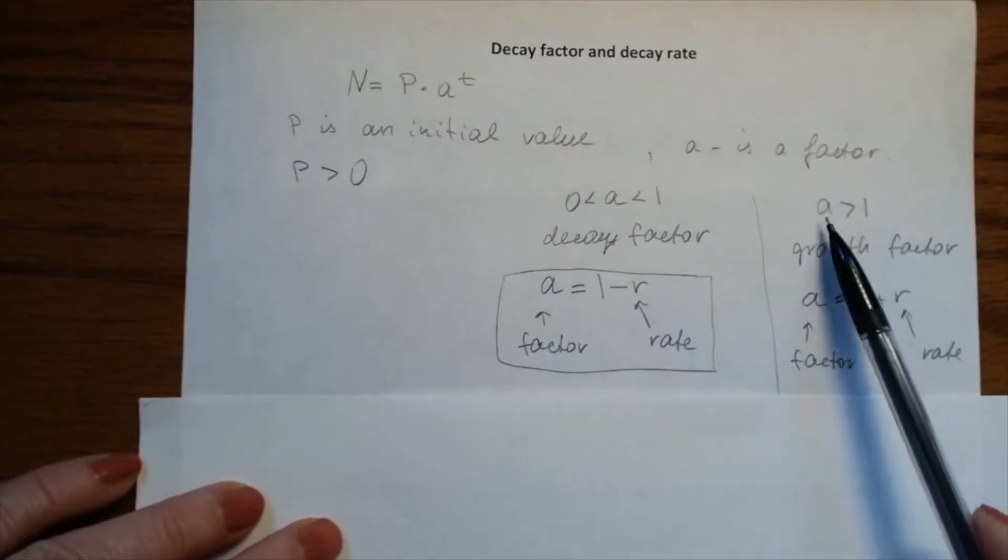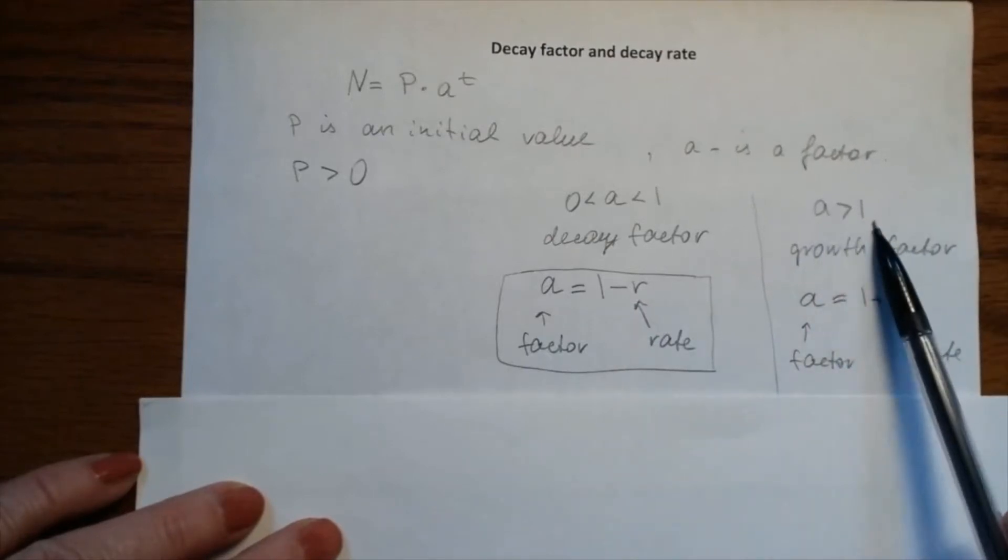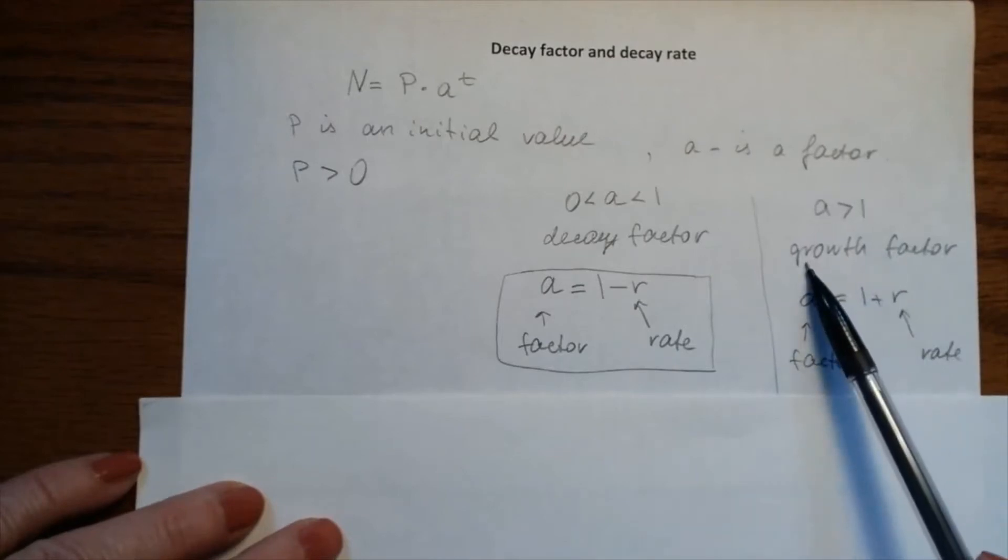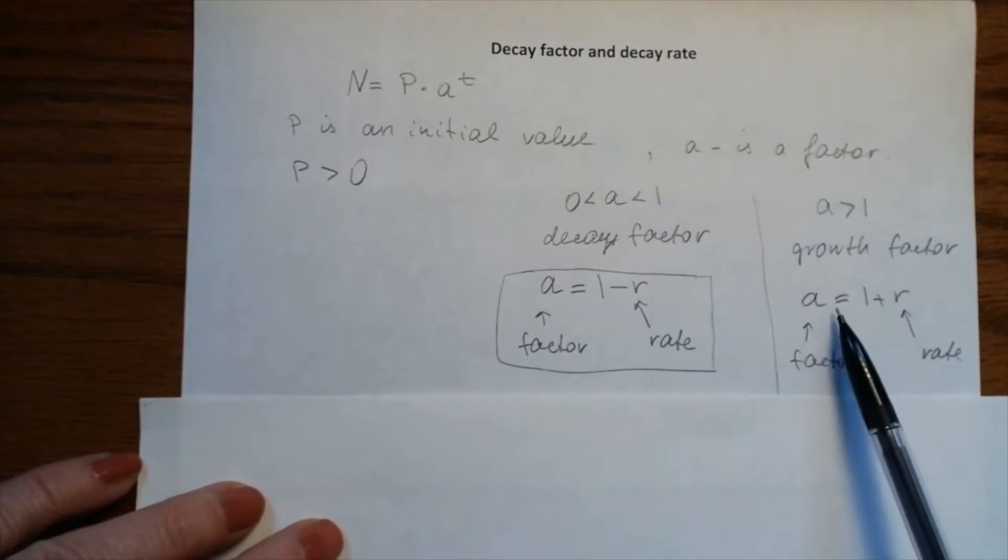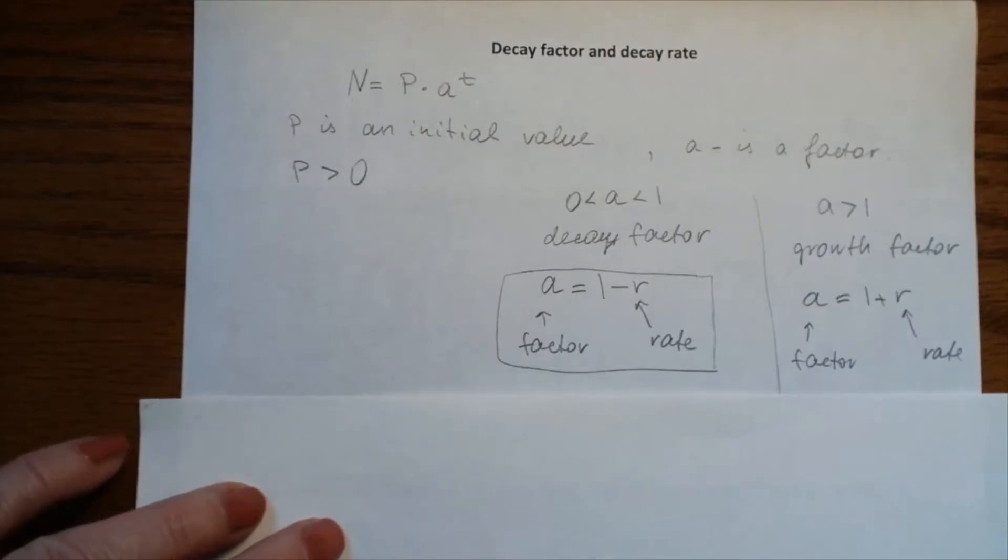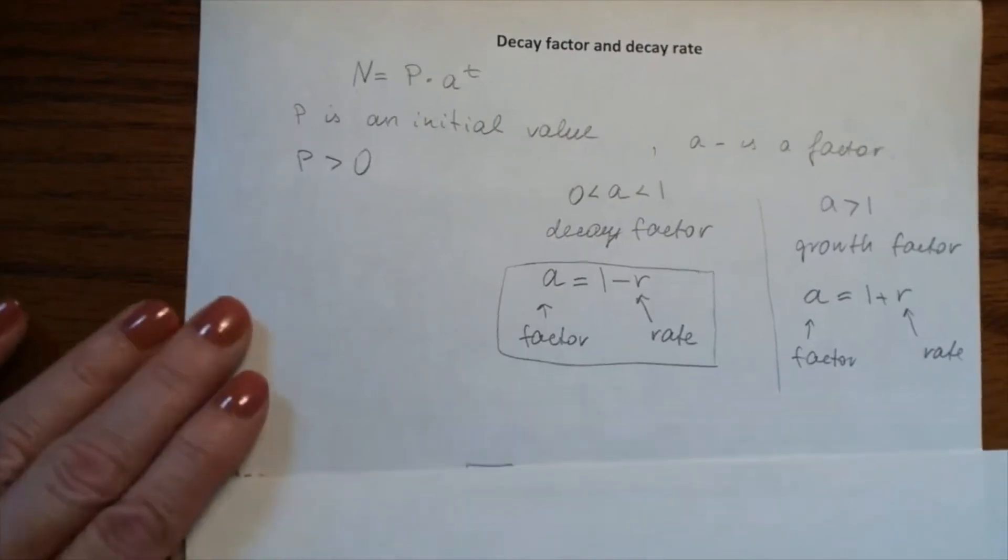In the second case, when a is greater than 1, we call this the growth factor. We use the formula a = 1 + r, where a is the factor and r is the rate. Let's review the first example.